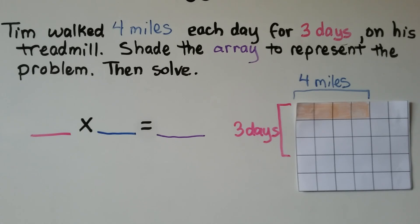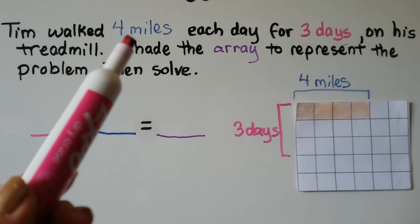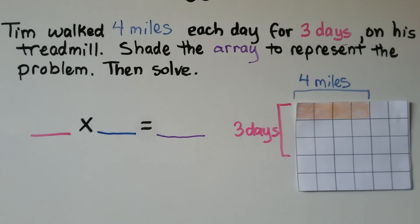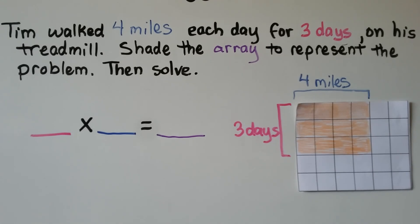Tim walked four miles each day for three days on his treadmill. Shade the array to represent the problem, then solve. The days are the groups, so we have three rows with four in each group. We've shaded in an array to represent three groups of four. Our multiplication sentence is three times four is equal to twelve.